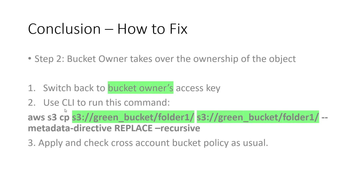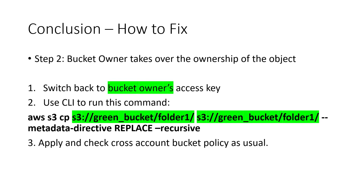In step two, we use the bucket owner to take ownership of the object. Switch back in the CLI to the bucket owner's access key and run this command. You are basically replacing the metadata of the file itself to take over the ownership. Then the final step is to apply and double-check your cross-account bucket policy as usual.